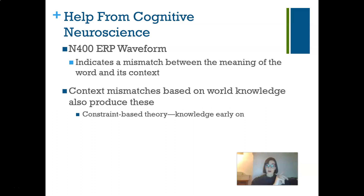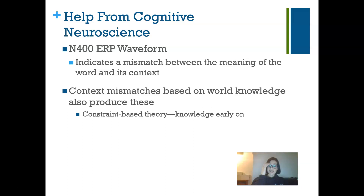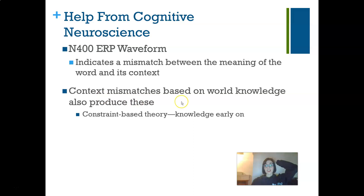We call it an N-400 because it is a negative waveform that starts about 400 milliseconds after a stimulus is presented, and it's often used to indicate a mismatch between the meaning of a word and its context. We also find that context mismatches based on world knowledge also produce these.